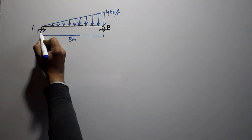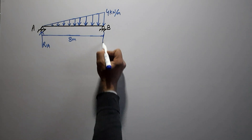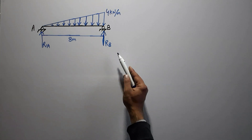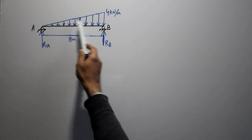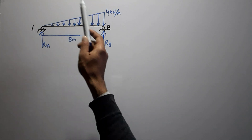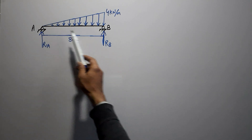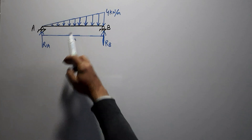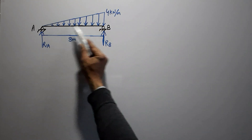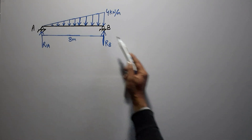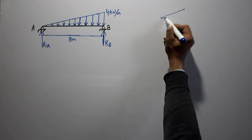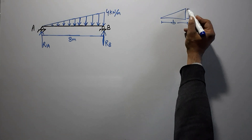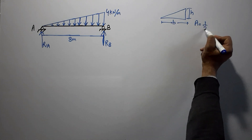To find the support reactions, let's call them RA and RB acting in the upward direction. First we need to calculate the total load acting on this beam. Because the load is varying, we find the total load by calculating the area of the triangular load. This is a triangular load, so we find the area of the triangle — if the base is B and the height is H, the area equals half times B times H.